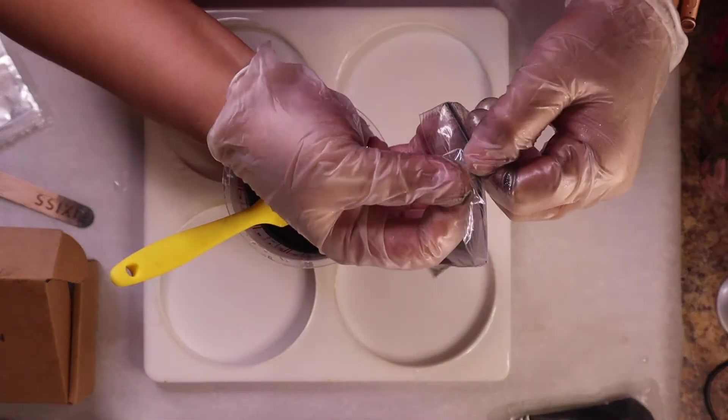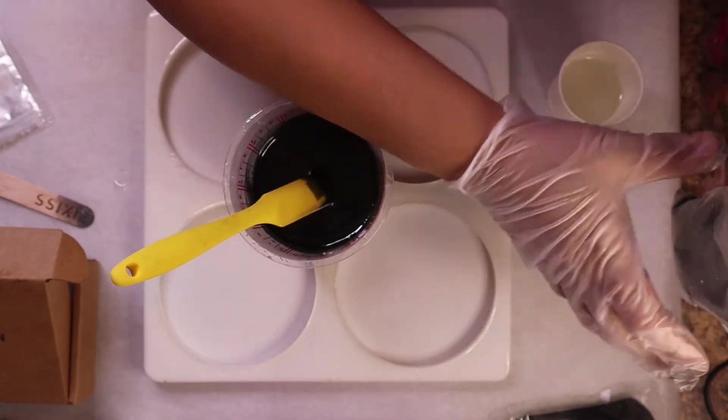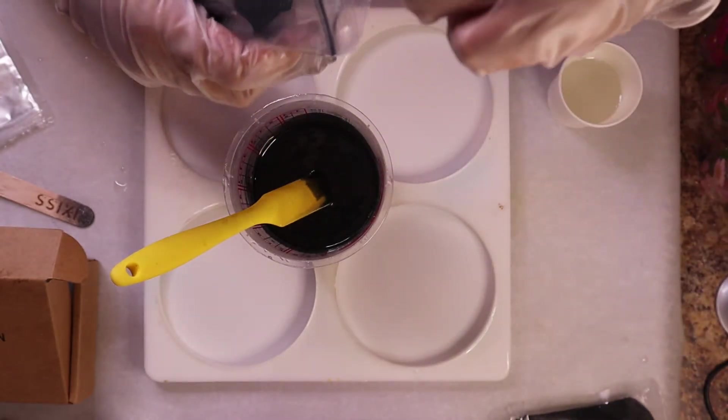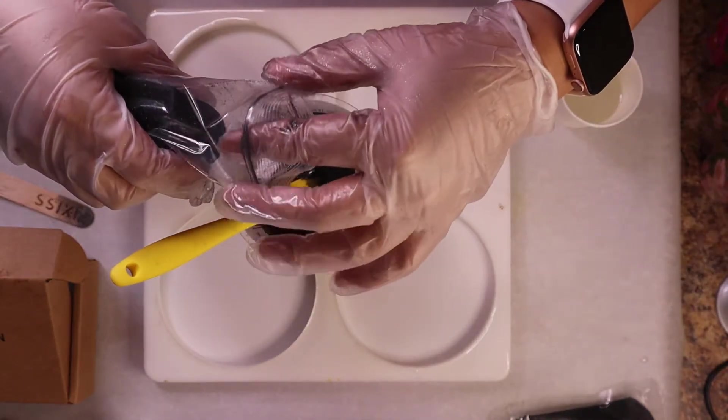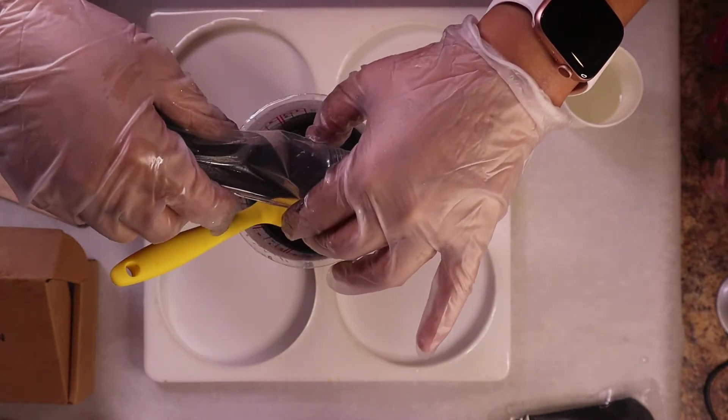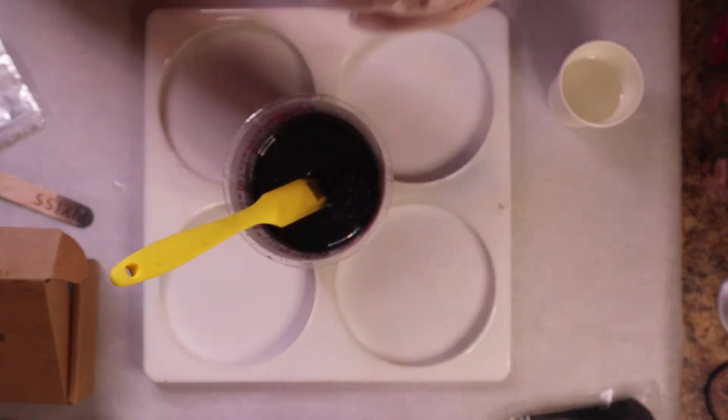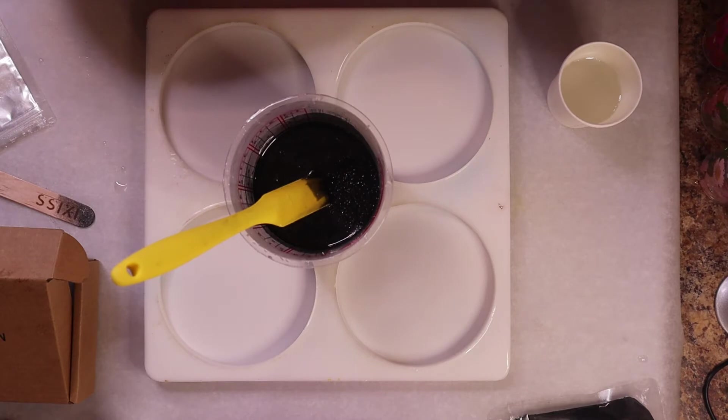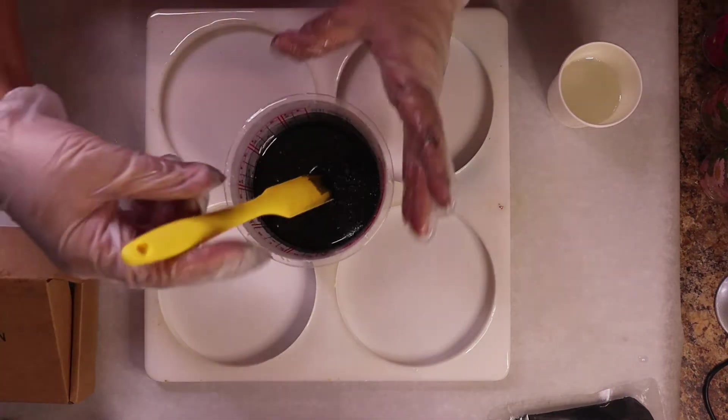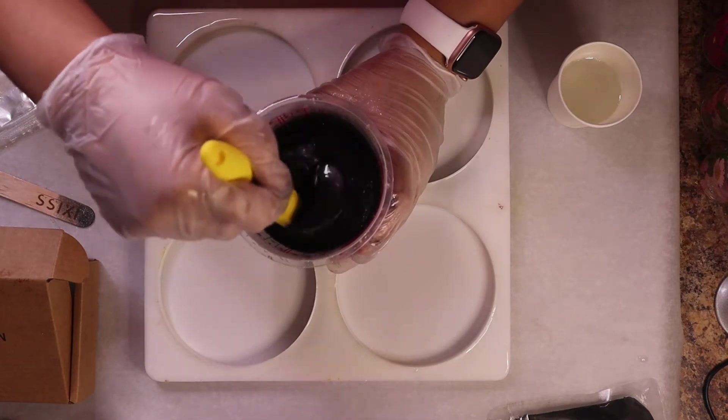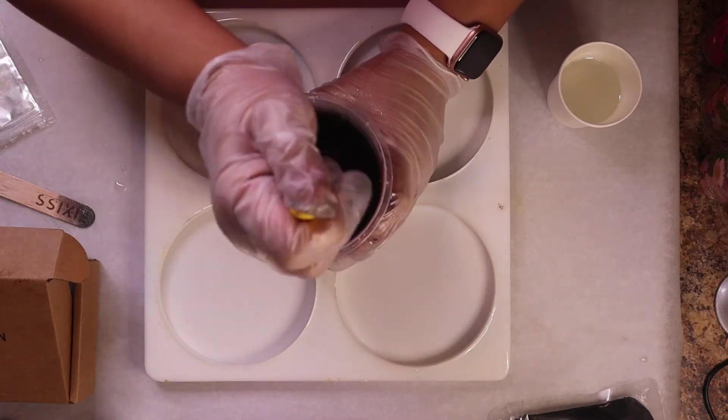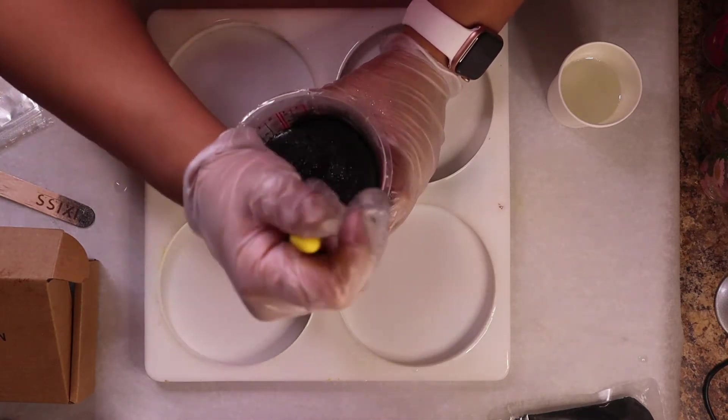And y'all know me, I've always got to have some glitter going on so I've just got some black glitter. I don't think it's really going to show that much unless I let the resin start to thicken up a little bit because the glitter tends to sink to the bottom if the resin is too runny. I might wait a few minutes just to see if I can keep some of it suspended versus sinking all the way to the bottom.